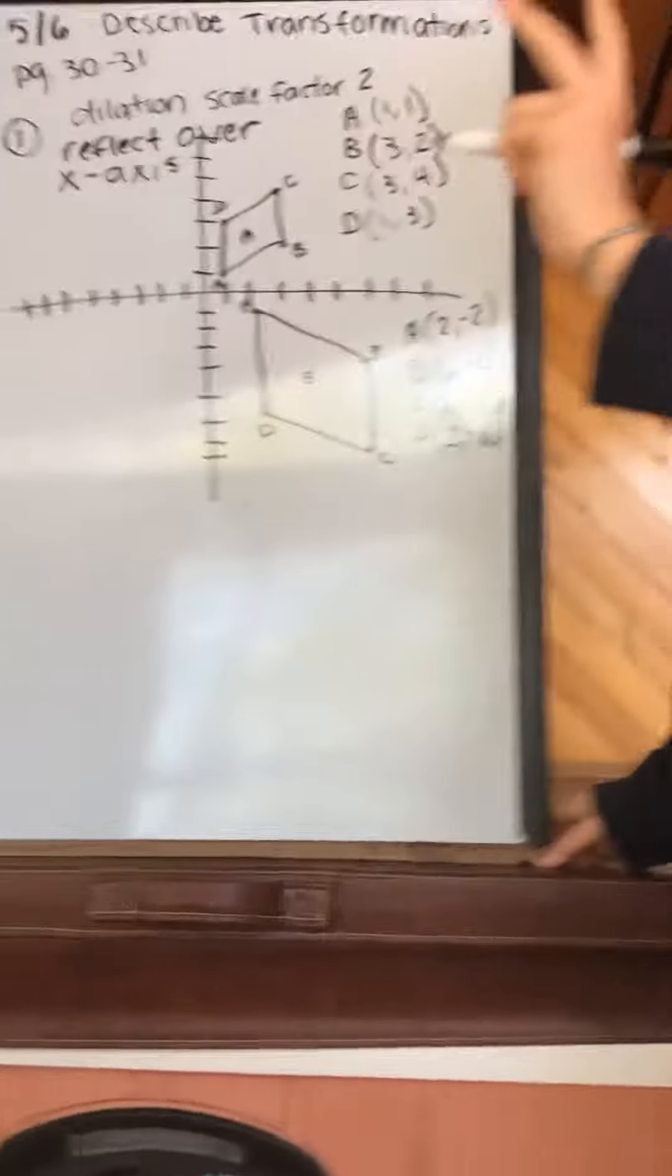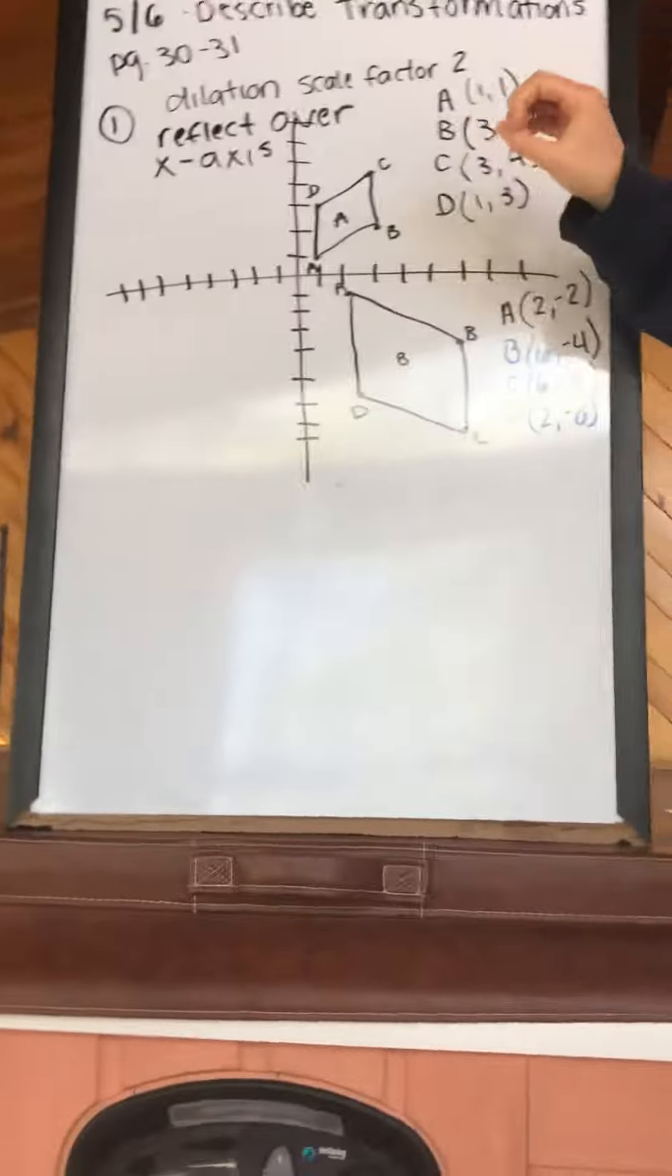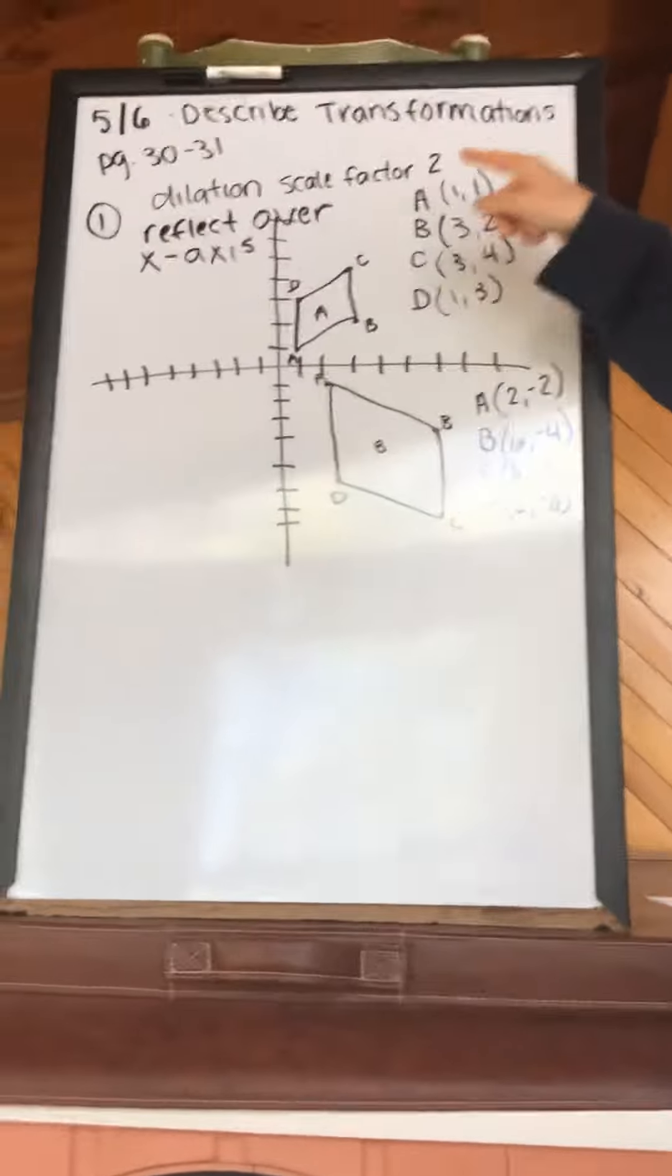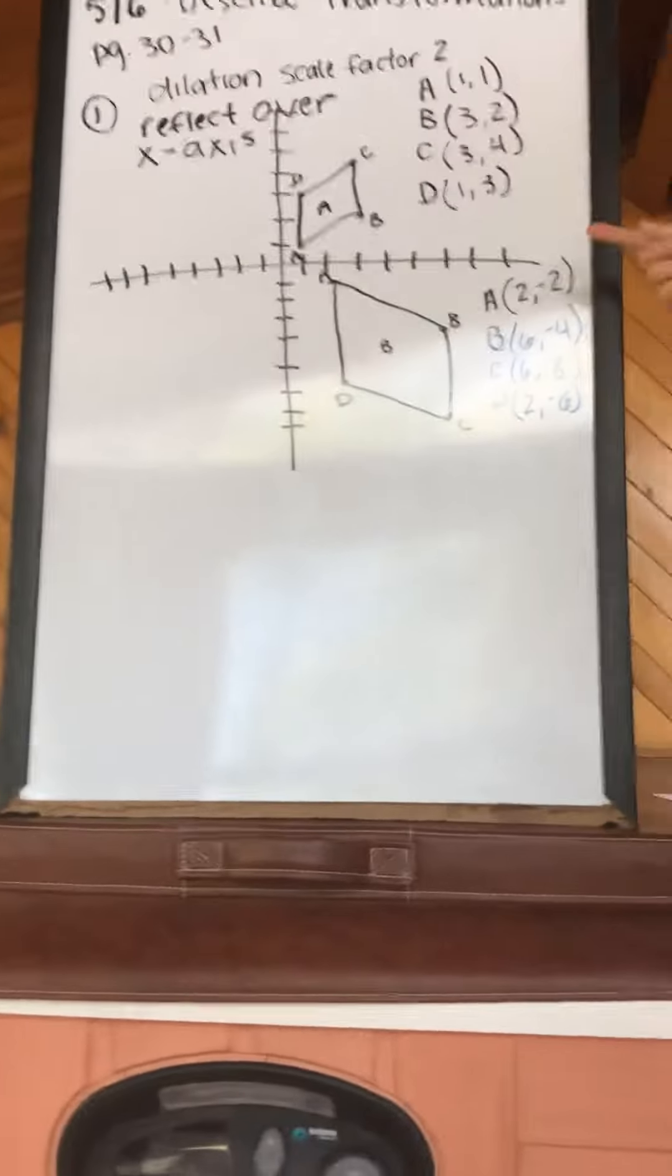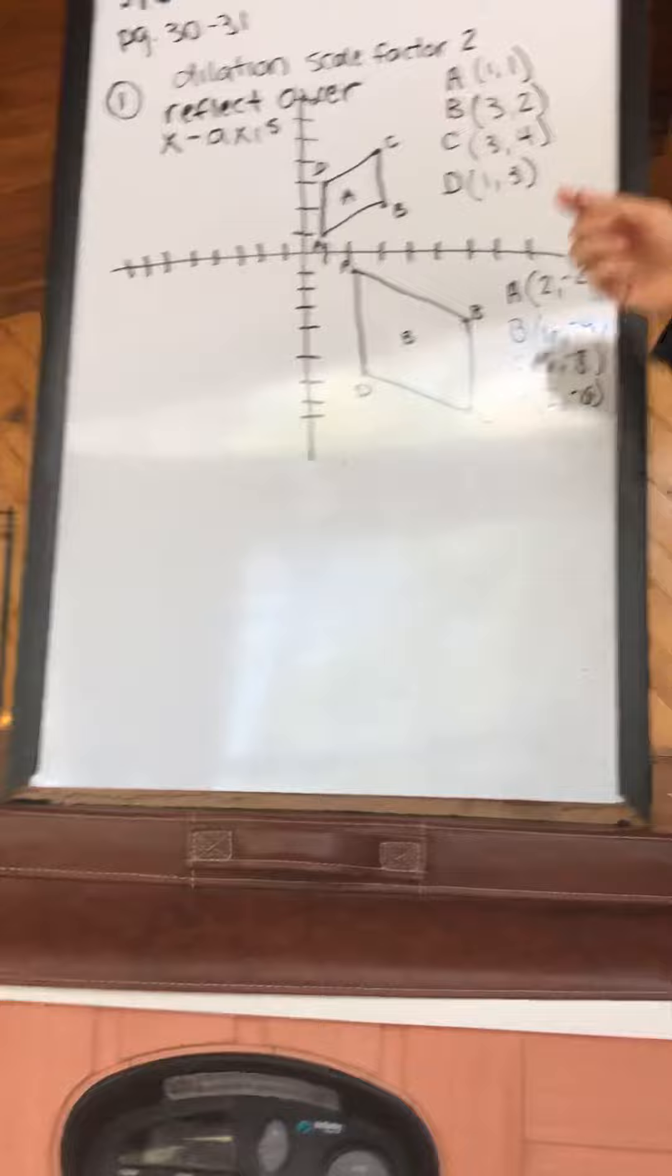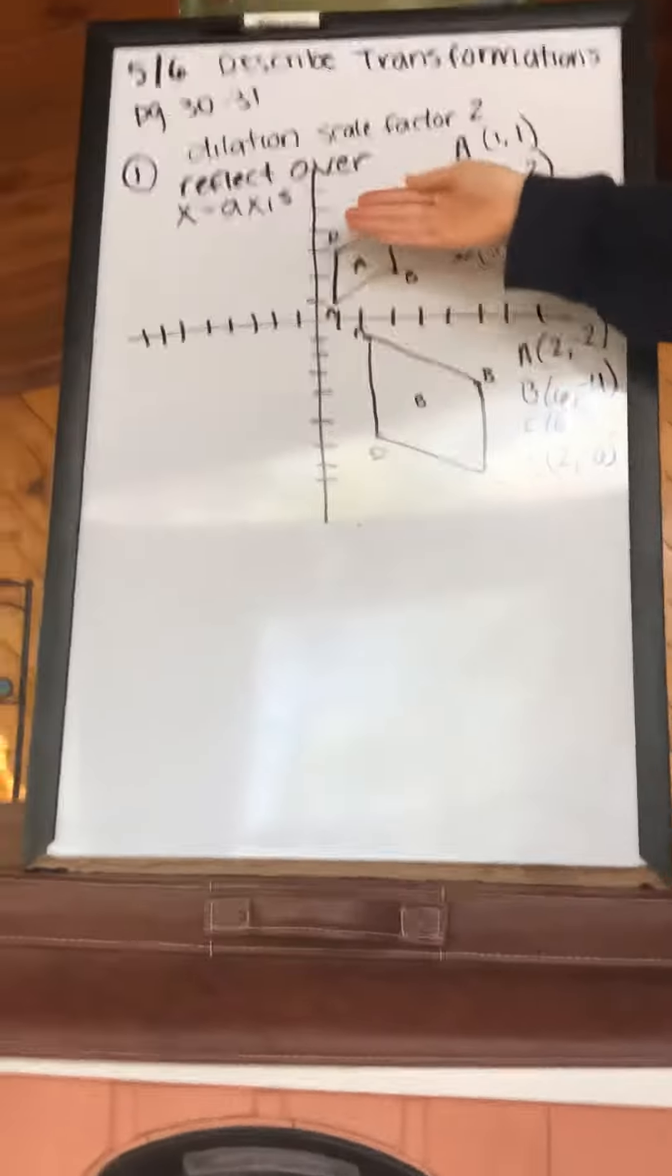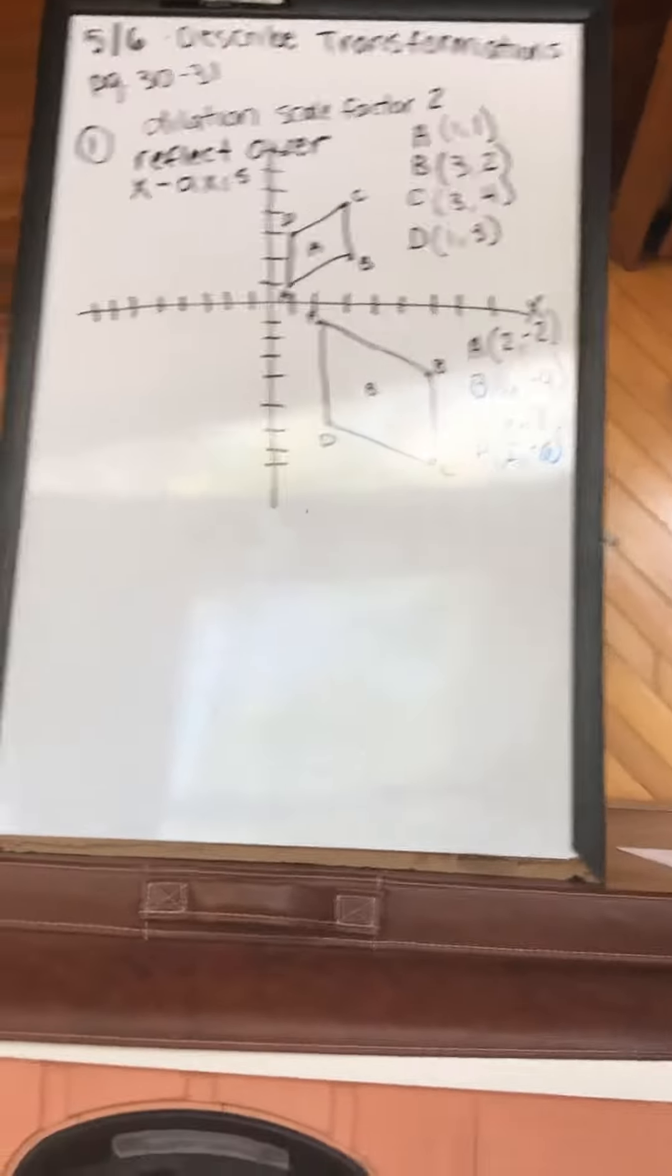So two things going on to get from A to B. We dilated it by a scale factor of 2. All of these numbers are doubling. And we reflected it over the x-axis. We flipped this figure over the x-axis. You can stop the video.